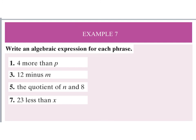Example seven asks us to write an algebraic expression for each phrase. 'Four more than p' gives p plus 4. '12 minus m' is straightforward. 'The quotient of n and eight' is n divided by eight. And '23 less than x' — remember, less than means x minus 23.